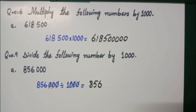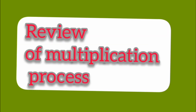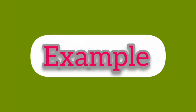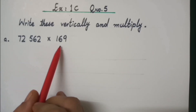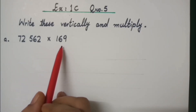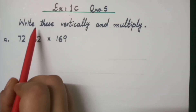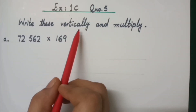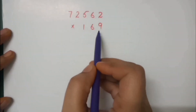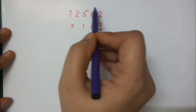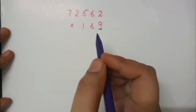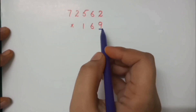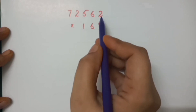Now quickly pause the video and solve these questions in your copy. Let's review the multiplication process. Take an example: we have 72,562 multiplied by 169. First of all, you have to write these numbers vertically. We first multiply 9 with the whole value. You have been doing this previously — we have to first read the table of 9.